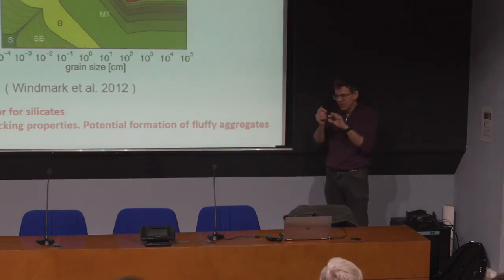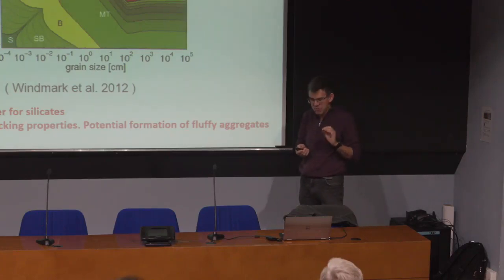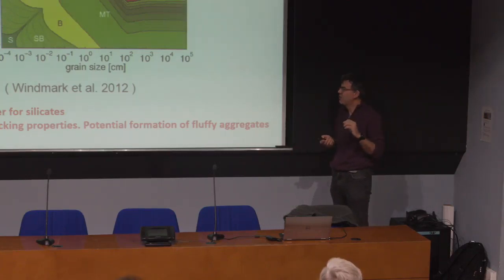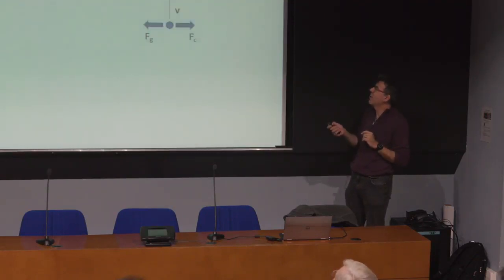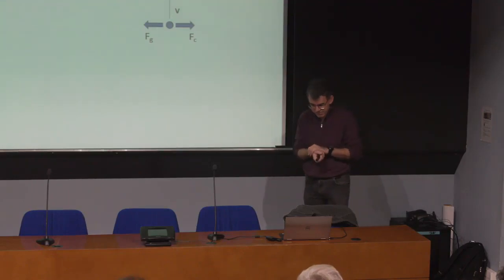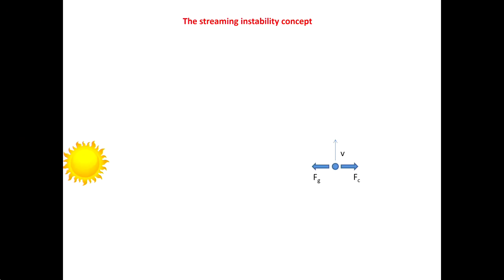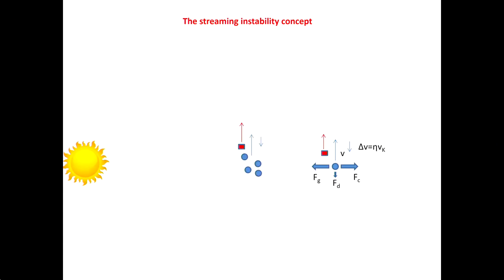Now the situation is improving. There is a new class of models — very promising, not yet complete, with a lot of work still to do — but they give hope for how big things form. The idea is the streaming instability. Particles in a disk of gas feel a headwind and experience radial migration. But if you have a clump of particles, by Newton's third law the particles speed up the gas, reducing the headwind felt by the clump.